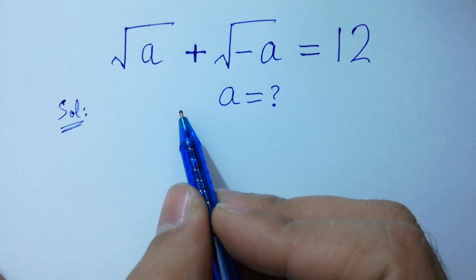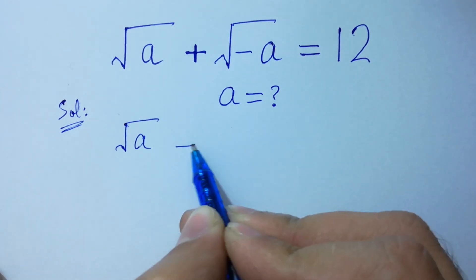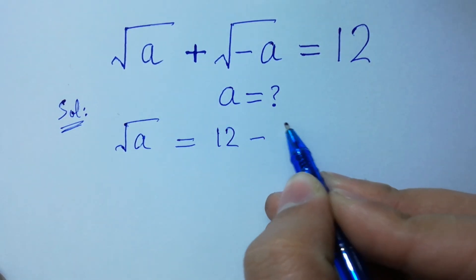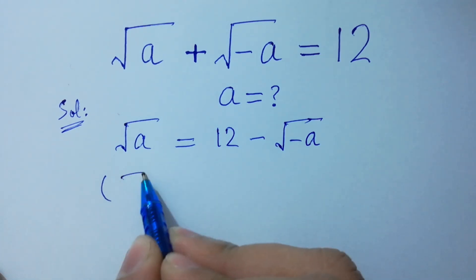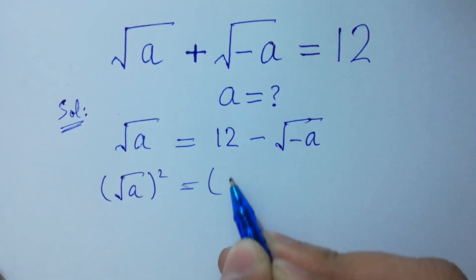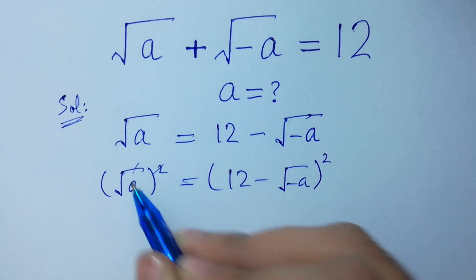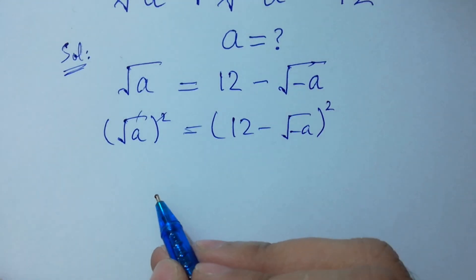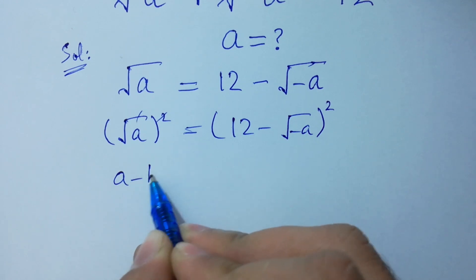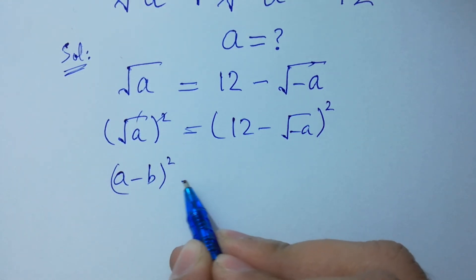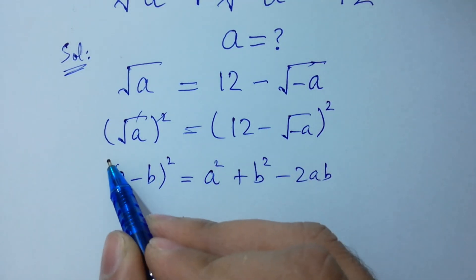This problem can be written as square root of a equal to 12 minus square root of minus a. Take square on both sides: 12 minus square root of minus a, squared. The square will be cancelled from the square root. We have a, and this expression is just like a minus b whole square, which is equal to a squared plus b squared minus 2ab, applied.